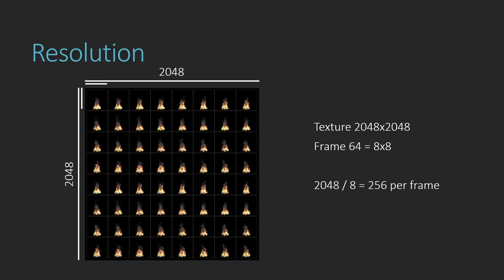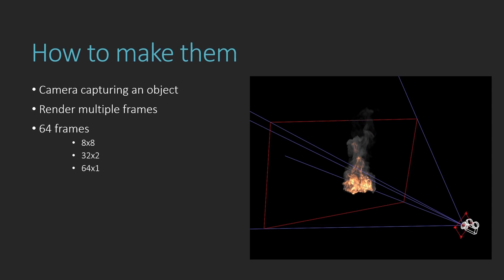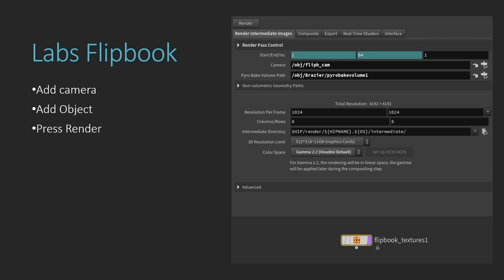The basic idea of making flipbooks is having a simulation in Houdini, placing a camera to capture the object, and rendering out multiple frames — for example 64 frames in an 8-by-8 grid. You can also use 32-by-2 or 64-by-1 grid spacings. We've made this easier with the Labs flipbook node. The main steps are: add your camera, specify what volume to render, and press the render button.